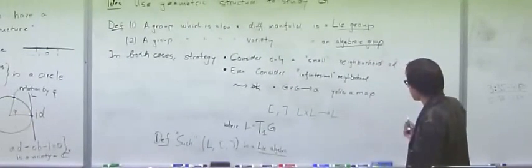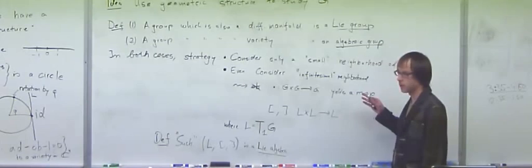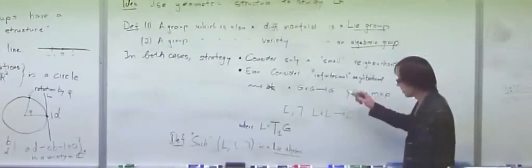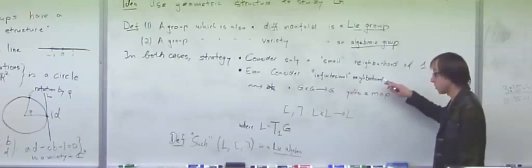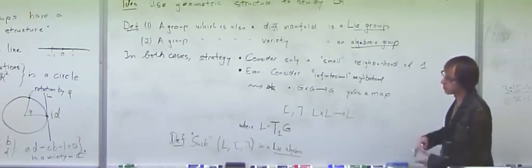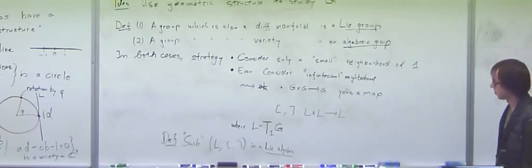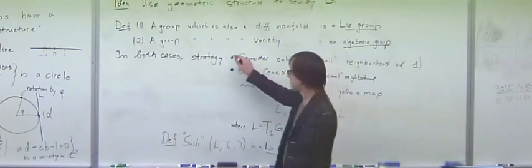I'll talk about the Baker-Campbell-Hausdorff theorem on Thursday, which essentially says that even if you only know this infinitesimal version of the group operation, you know the entire group multiplication. So you don't actually need the small neighborhood approach.